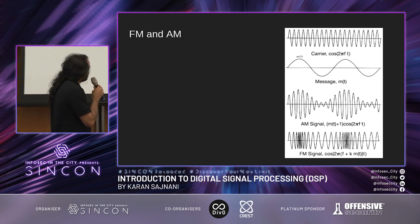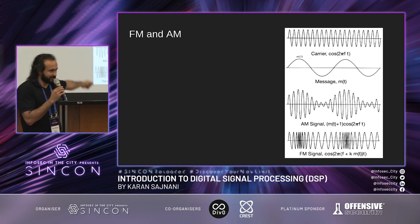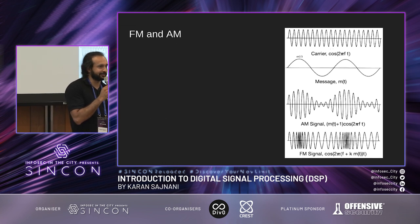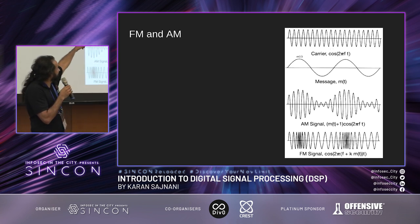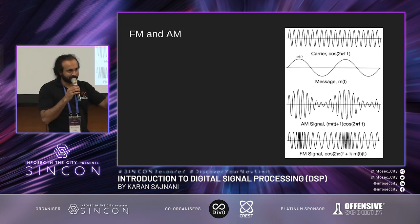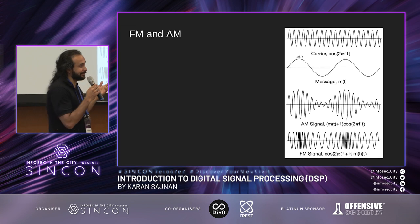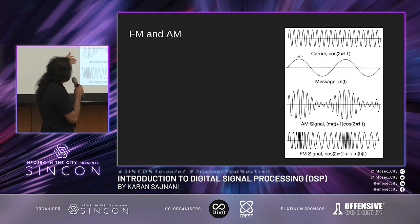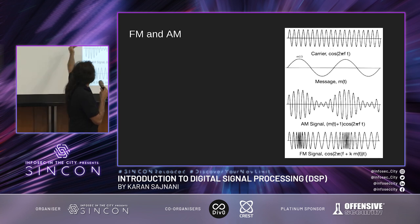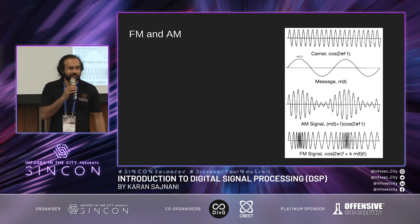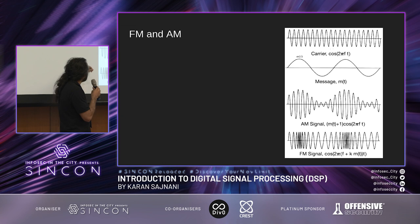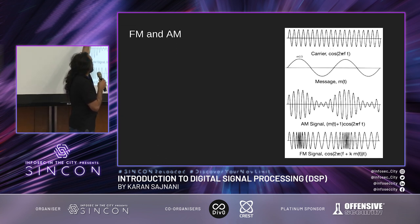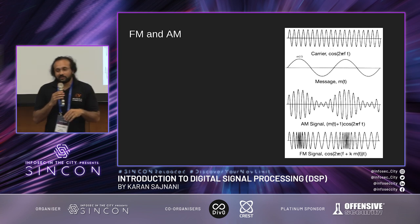The top signal is the carrier wave, which carries the message. The second is the baseband signal — essentially the message. Amplitude modulation is shaping that carrier signal according to the message. You can clearly see how the amplitude changes with the message. Below that is FM, or frequency modulation — where the baseband signal goes up, the frequency increases and the waves come together; where it goes down, they're spaced apart. That's how frequency modulation works. There's also a third type — phase modulation — which works in a similar way.